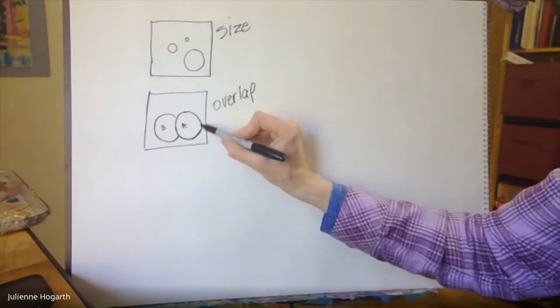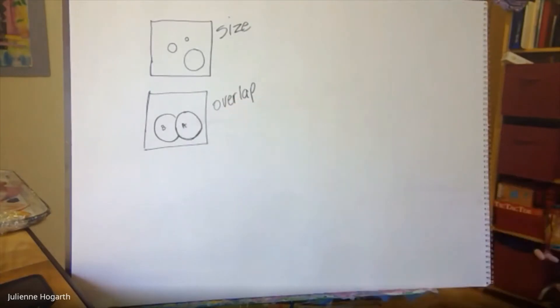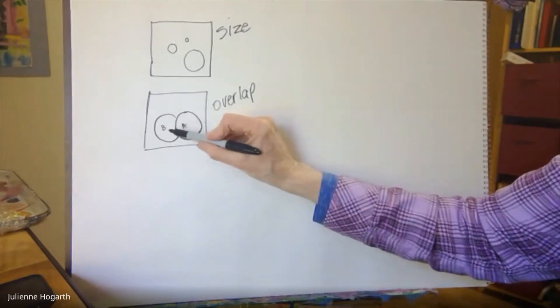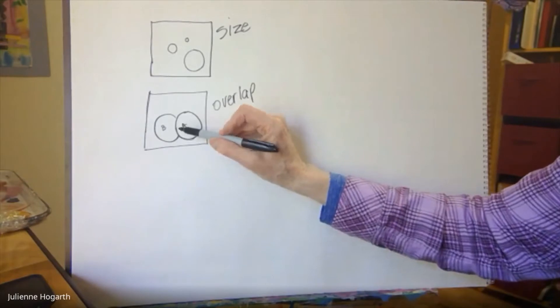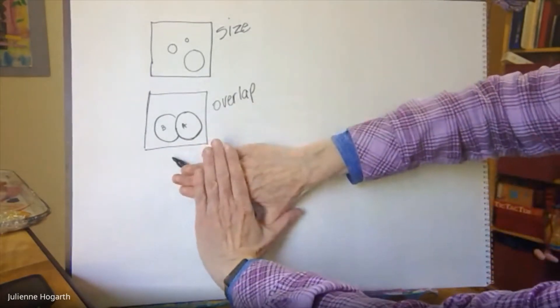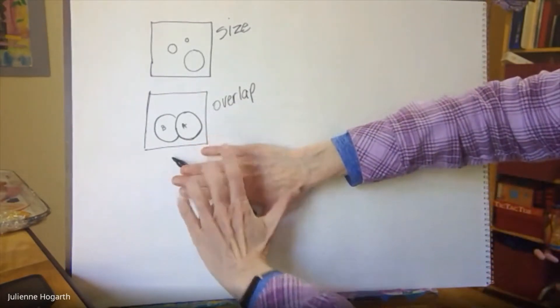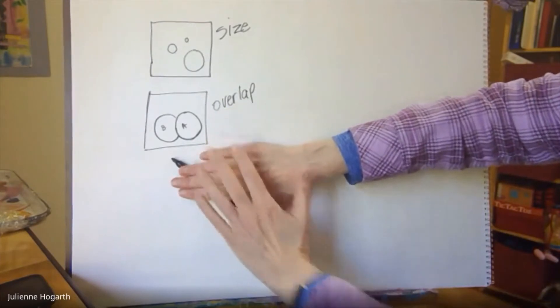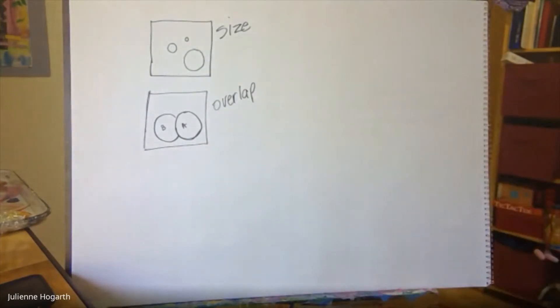Okay if you see all of it it's closer because this one's covering up part of it so it has to be closer. Same as your hands right. This hand is closer because it's covering up or overlapping this hand. Okay so overlap is another one.